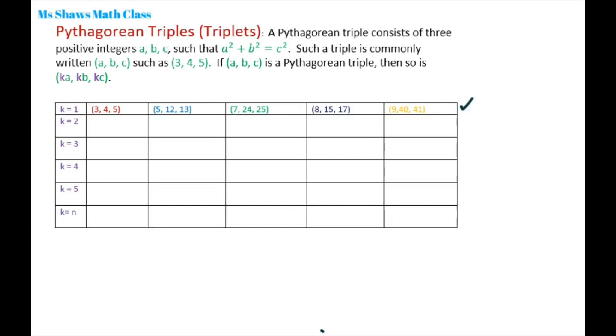So this first row is called the primitive Pythagorean triples. If k is 1, we get our primitive Pythagorean triples. Now if k is 2, we just multiply these numbers up front. So 2 times 3 is 6, 2 times 4 is 8, and 2 times 5 is 10. Let's do this one: 2 times 5 is 10, 2 times 12 is 24, and 2 times 13 is 26, and so forth.